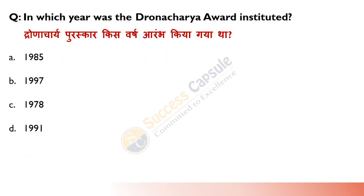In which year was the Dronacharya Award instituted? Answer is A — 1985. Yeh award outstanding coaches in sports and games ko diya jaata hai. Dronacharya naam Mahabharata ke Guru Drona ke naam par rakha gaya hai. First recipient Balachandra Bhaskar Bhagwat the — wrestling ke liye — jinhe 1985 mein Dronacharya Award diya gaya tha.